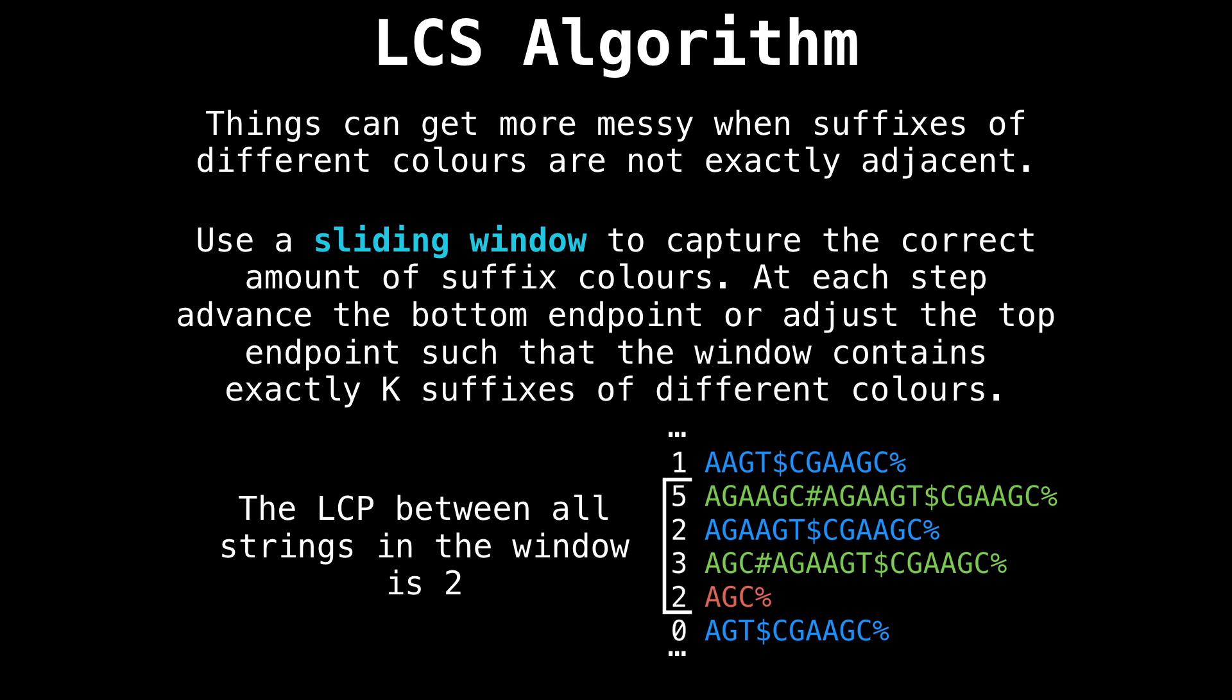Again, ignore the first entry, which is five. Since the minimum value for that window is two, all the suffixes in that window do share the prefix AG, which has length of two, as we would expect.